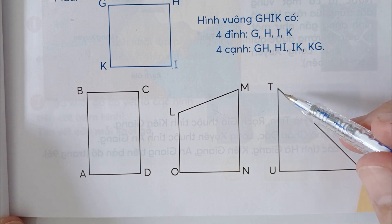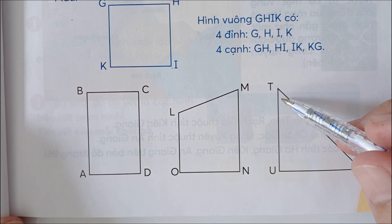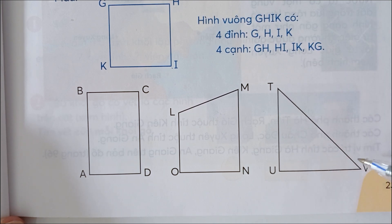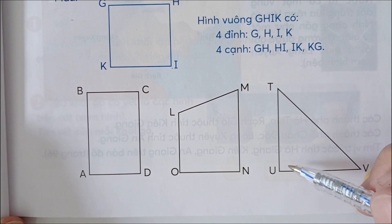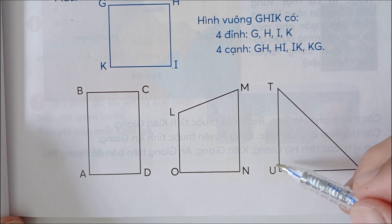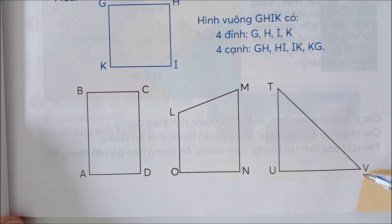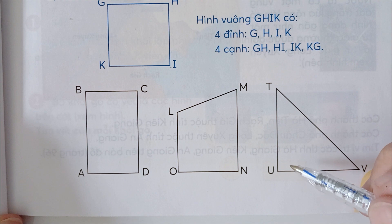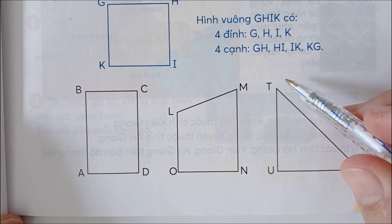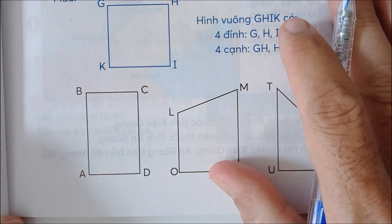Hình tam giác U, T, V có 3 đỉnh là U, T, V. Có 3 cạnh là UT, TV, VU.